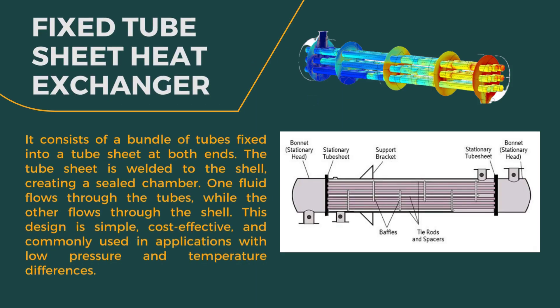As the name suggests, the fixed tube sheet heat exchanger consists of a bundle of tubes fixed into a tube sheet at both ends. The tube sheet is welded to the shell, creating a sealed chamber. One fluid flows through the tubes while the other flows through the shell. This design is simple, cost-effective, and commonly used in applications with low pressure and temperature differences.